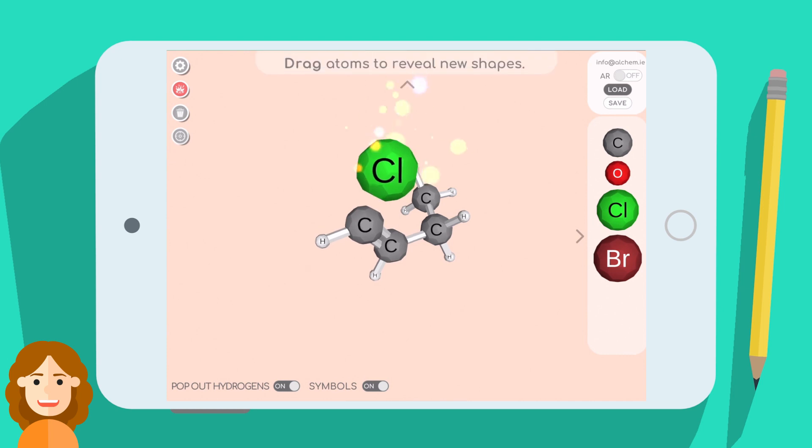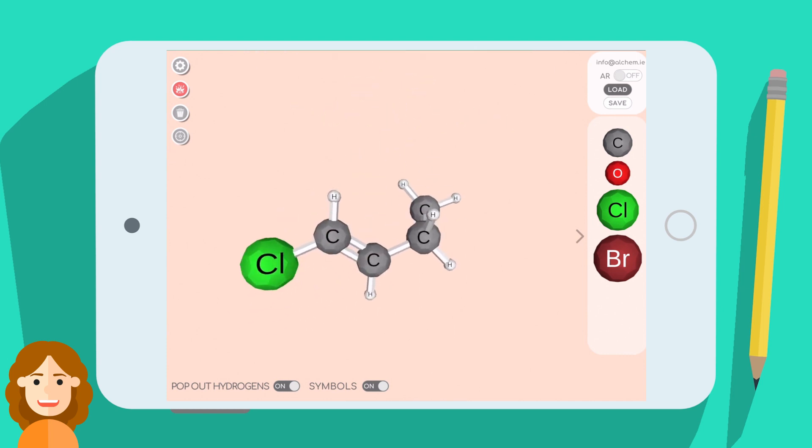This feature is useful for inverting a chair or changing an alkene between E and Z without having to rebuild it.